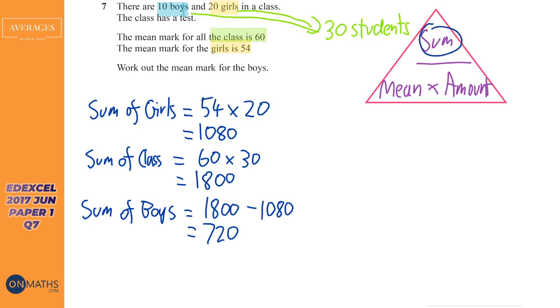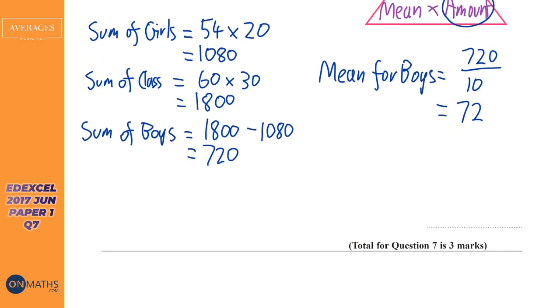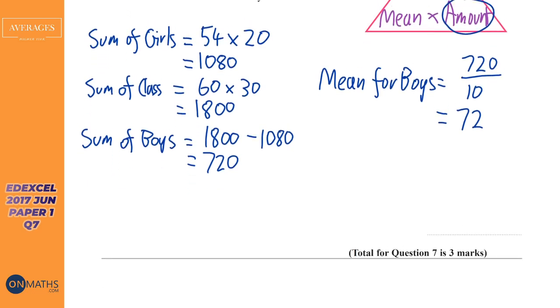So we've got the sum and we've got the amount because it tells us in the question. So the mean for boys is the sum which is 720 divided by the amount which is 10, not using a calculator for that. So the answer will be 72. So there's my answer part there and we can put it in the little answer part there.